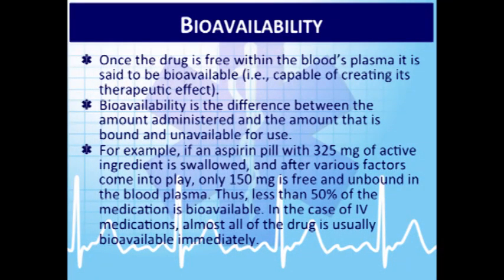Bioavailability is the difference between how much medication you actually take versus how much actually reaches your bloodstream. IV medications have nearly 100% bioavailability. If you take a pill, some medication may not break down or get absorbed and just passes through your system. Aspirin at 325 mg may only have about 150 mg absorbed — that's less than 50% bioavailability.